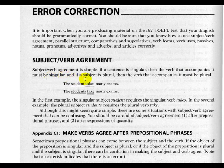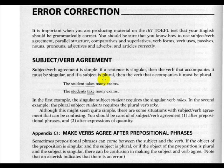If the subject is plural, then the verb that accompanies it must also be plural. For example: 'The student takes many exams.' Student is the subject and the verb is singular. Often in English we do not include the pronoun, but if you insert it you would say 'the student — he takes many exams.' That's one good way of checking whether you need plural or singular.